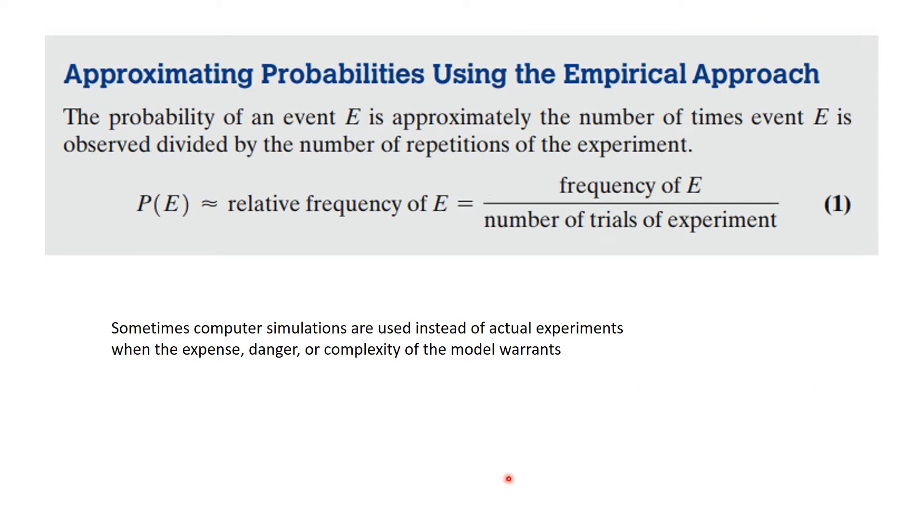A lot of times we will approximate probabilities using empirical approaches, and a lot of times that means we just run a bunch of trials with experiments and we see how often does event E happen. And that approximates the relative frequency which is corresponding to the probability of E. Now sometimes computer simulations are used instead of actual experiments when the expense, danger, or complexity of the model warrants.